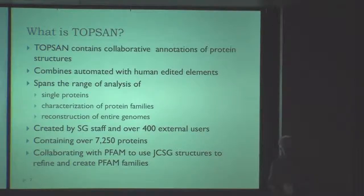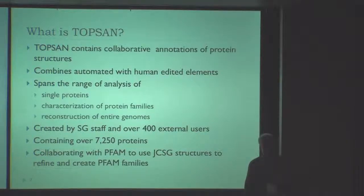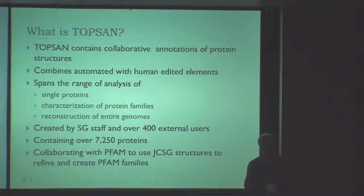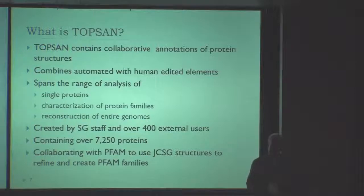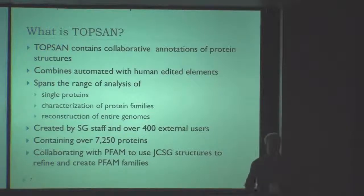Some of this data, which is available via the semantic web, has also been generated automatically. At this point, what is lacking is that we don't really have an ontology — that's still something we need to work on, and it's still in progress. But the hope is that eventually all those annotations, or at least part of them which can be encoded, will be accessible for computational analysis using semantic web technology.